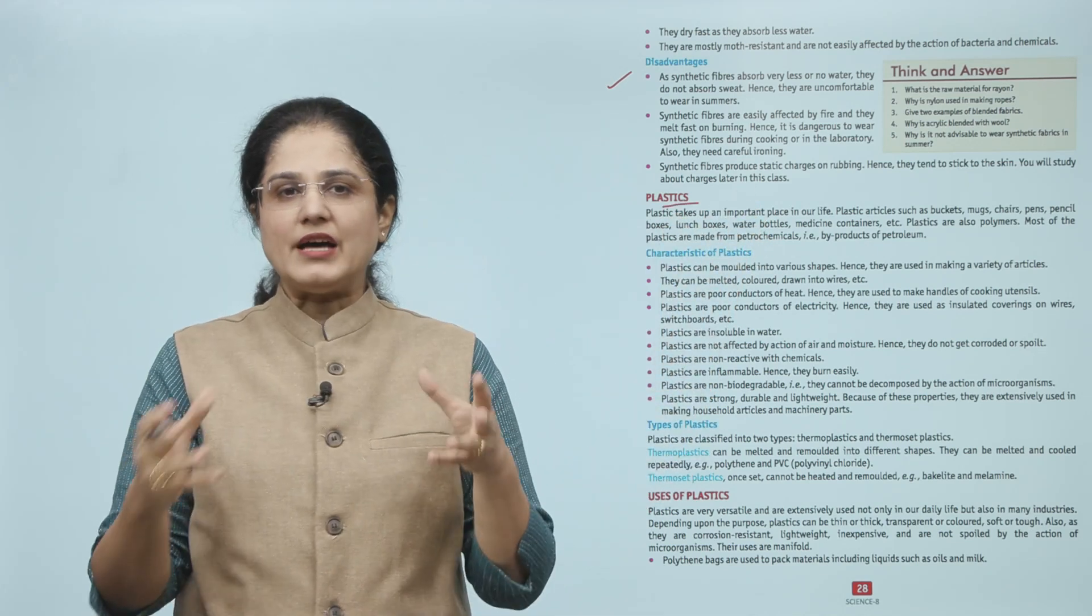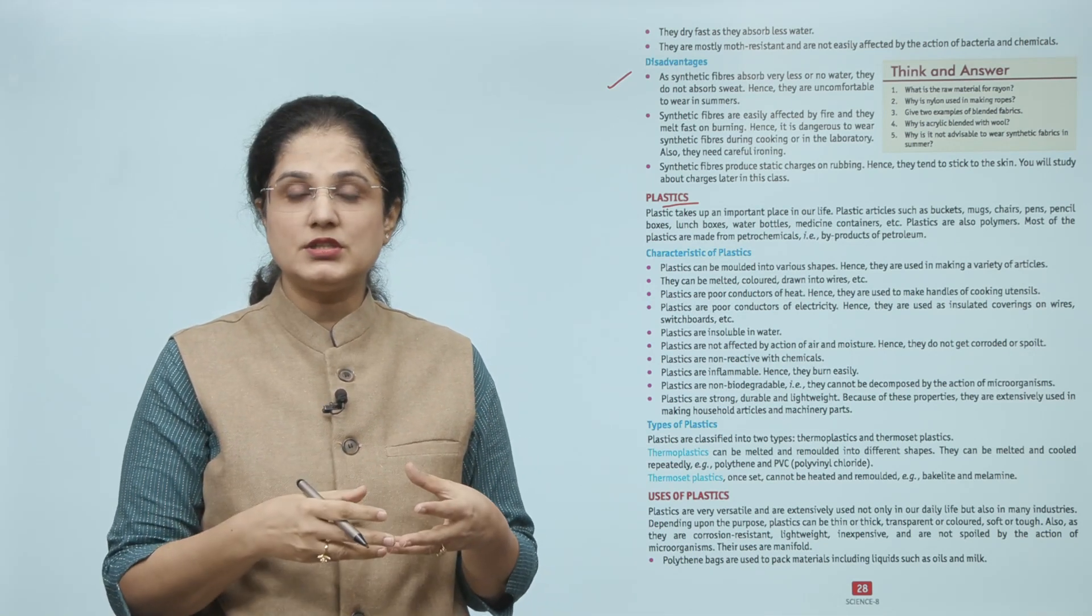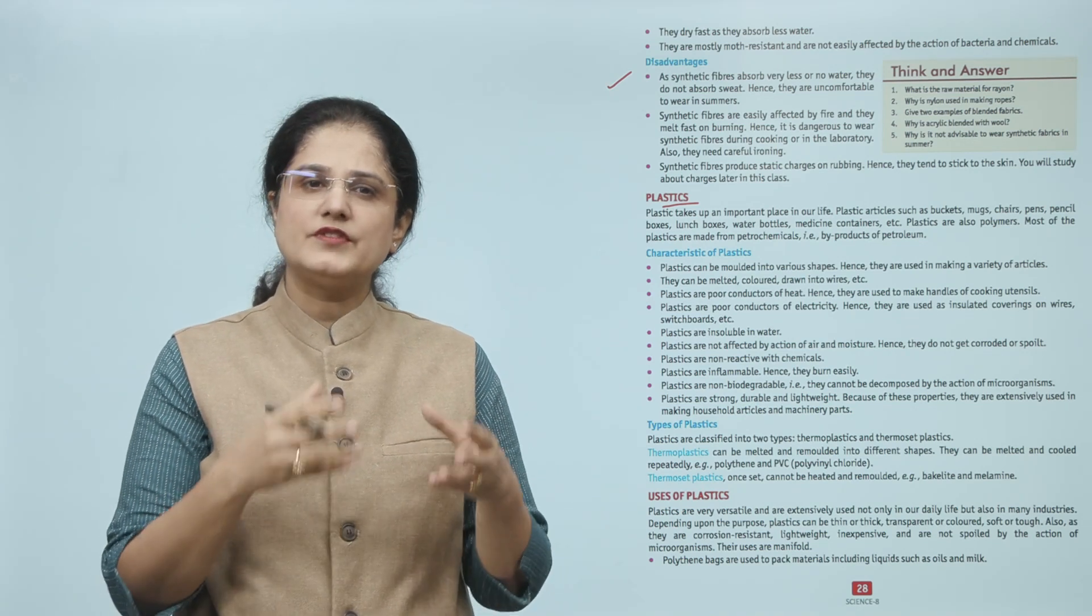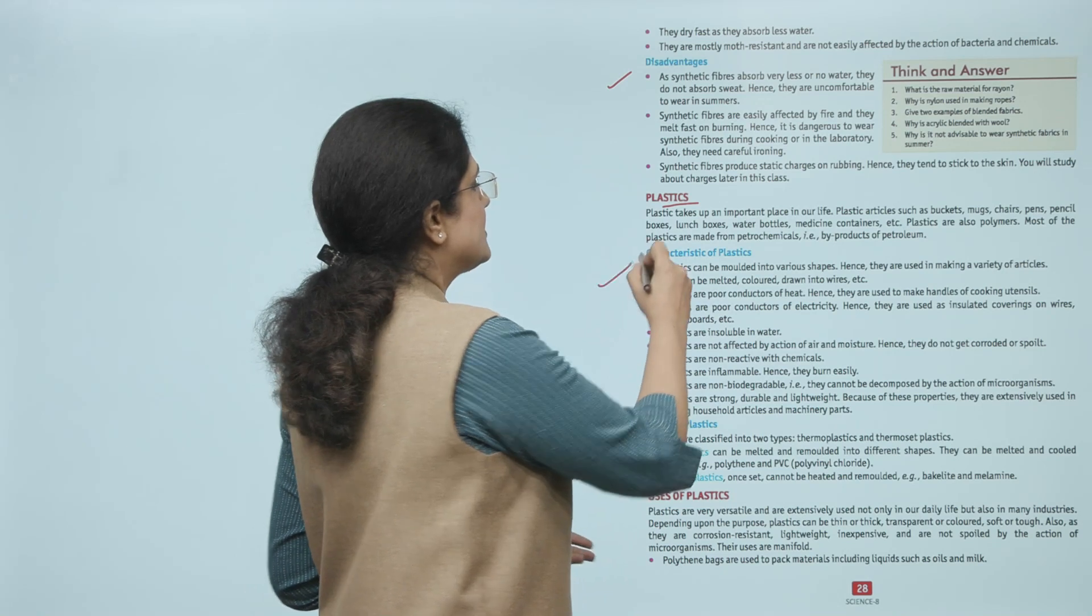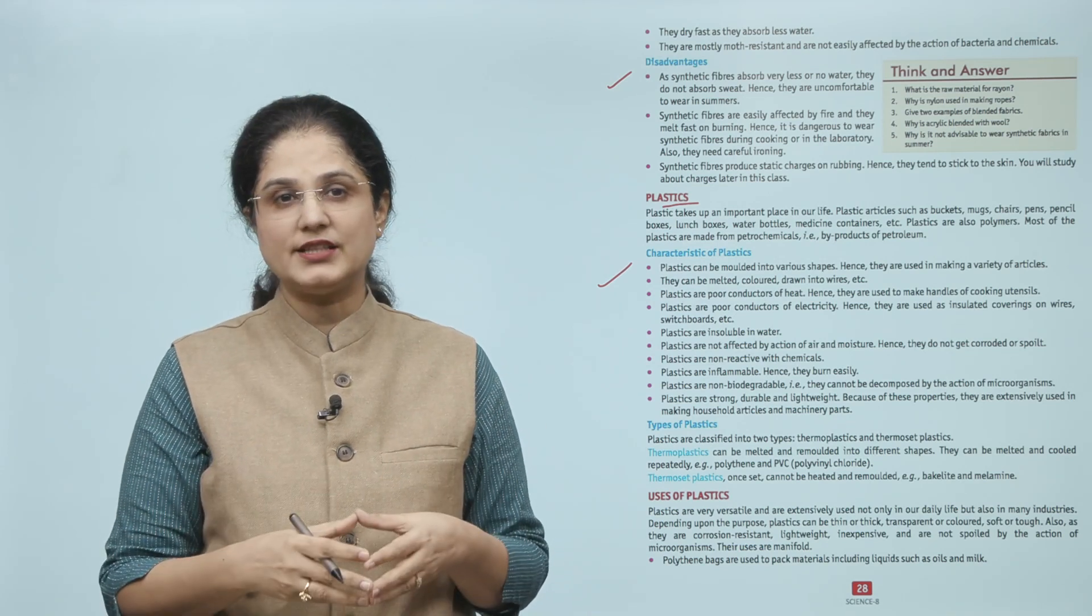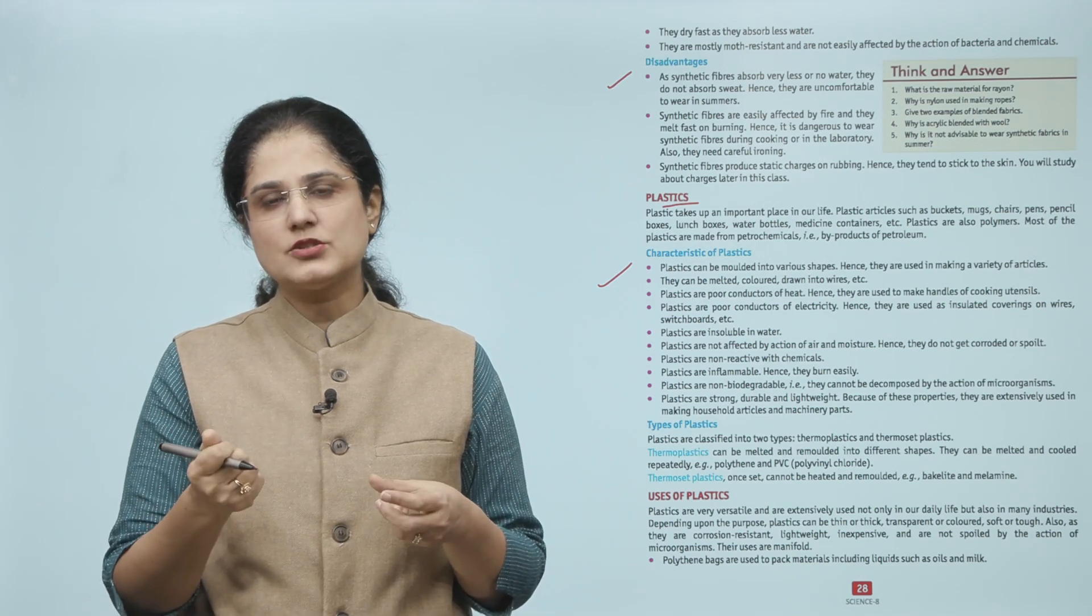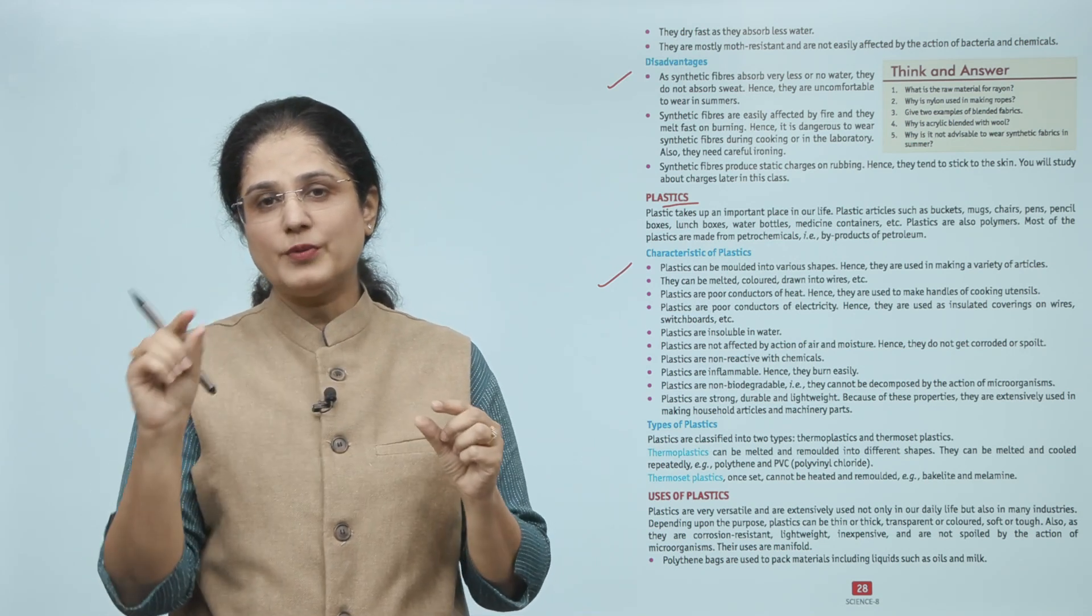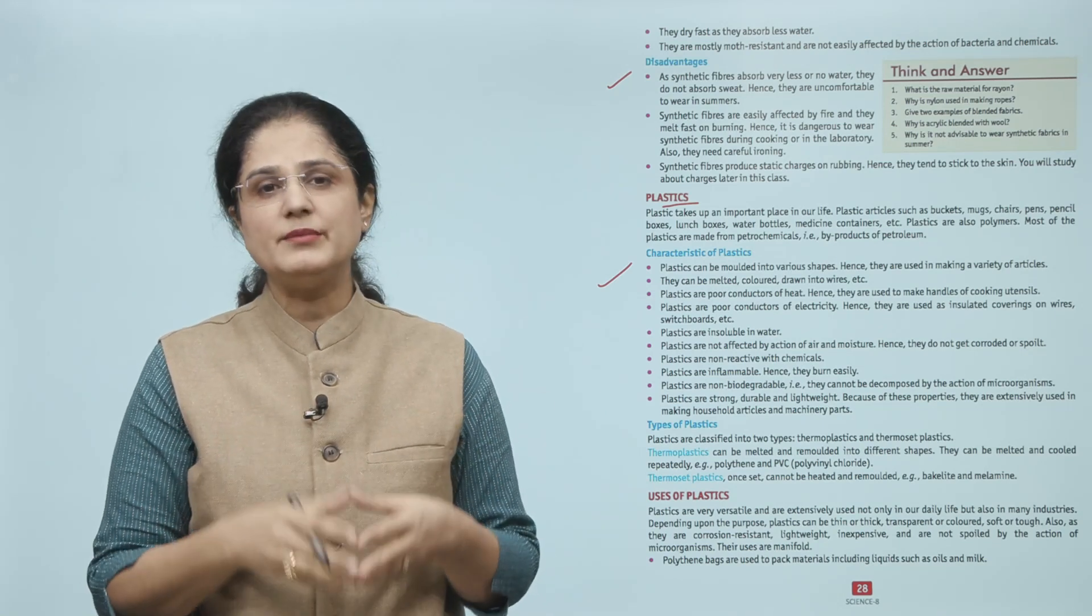Let us now look at plastics. Plastics are very important in our life. Buckets, mugs, chairs, pens, pencils, boxes, lunch boxes, water bottles, medicine containers - all these things use plastic. Plastic is also a polymer. Most plastics are made from petrochemicals, that is byproducts of petroleum. Now let us look at the characteristics of plastics. Plastics can be molded into different shapes, so many different types of articles are made from them. They can be melted, colored, drawn into wires, etc. Plastics are poor conductors of heat, so they are used in making handles of cooking utensils. They are poor conductors of electricity, so the insulated coverings of wires and switchboards use plastics.